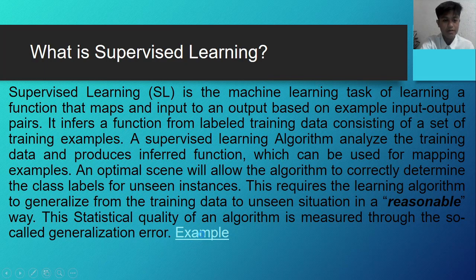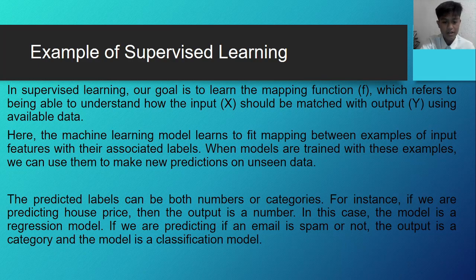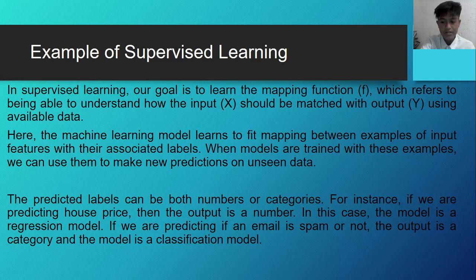Let's look at an example of supervised learning. In supervised learning, our goal is to learn the mapping function f, which refers to being able to understand how the input x should be matched with output y using available data. The machine learning models learn to fit a mapping between examples of input features with their associated labels. When models are trained with these examples, we can use them to make new predictions on unseen data. The predicted labels can be both numbers or categories. For instance, if we are predicting house price and the output is a number, the model is a regression model. If we are predicting if an email is spam or not, the output is a category and the model is a classification model.